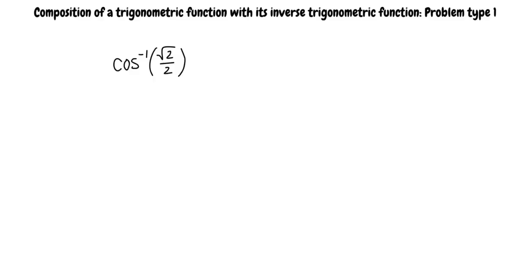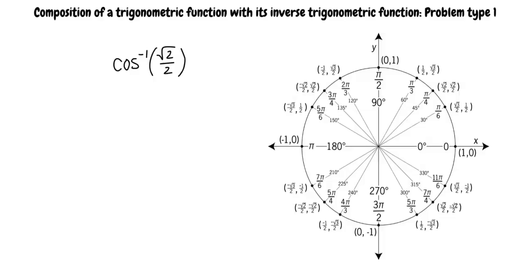Suppose that we want to know cosine inverse of square root 2 over 2. This means that we must find the angle that has square root 2 over 2 as its cosine. We are given the x value of a point on the unit circle and asked to find the corresponding angle. Looking at the unit circle, it seems that the solution to this would be pi over 4 and 7 pi over 4.